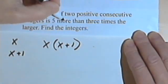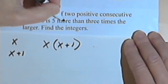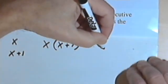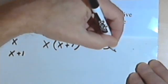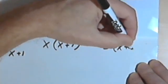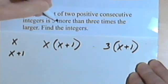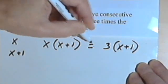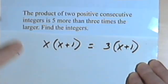And then it says it's 5 more than 3 times the larger. Well, the larger one is x plus 1, so 3 times the larger one would be 3 times x plus 1. It is 5 more than 3 times. So let's put an equal sign here.